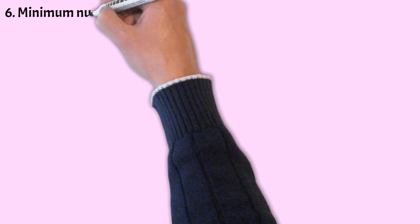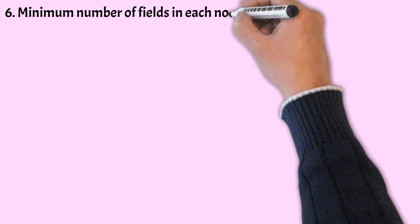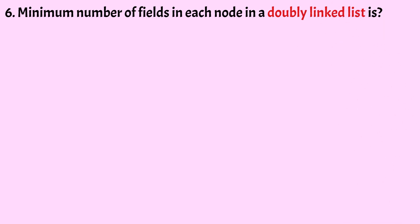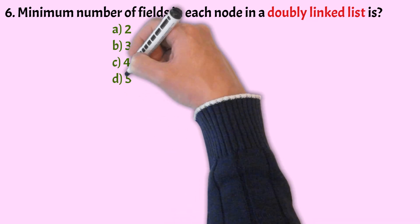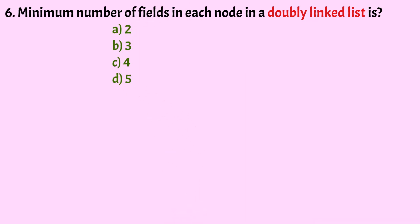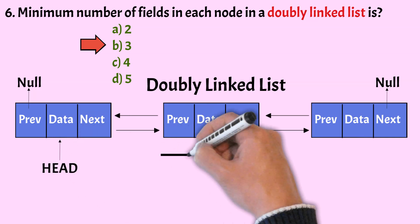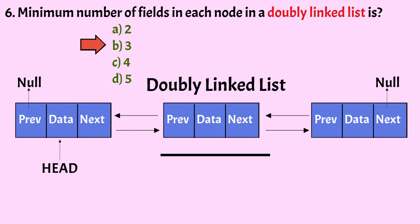Coming to the next question. What is the minimum number of fields in each node in a doubly linked list? The options are: 2, 3, 4, and 5. The correct option is Option B, that is 3. A doubly linked list requires at least 3 fields: the previous field, the next field, and the data field.